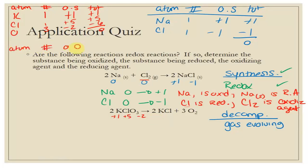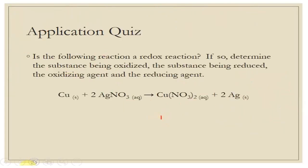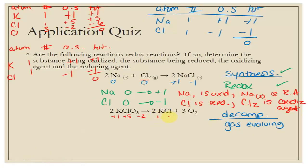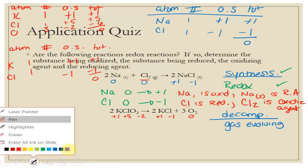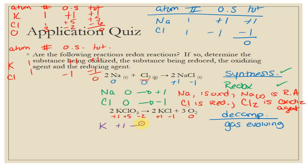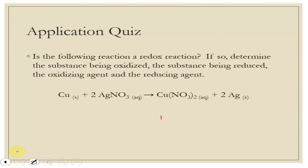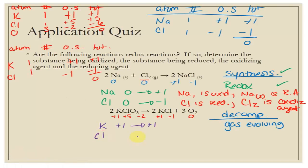Now for the products. In KCl: atom, number, oxidation state, total — K and Cl, one of each. K is not an exception, so plus one. The only way to reach zero is for Cl to be minus one. So in KCl, it's plus one and minus one. For O₂, oxygen in its native state is zero. Summarizing linearly: K goes from plus one on the left to plus one on the right — no change. Chlorine goes from plus five on the left to minus one on the right.